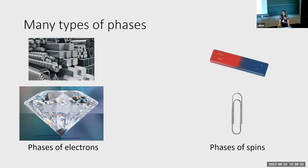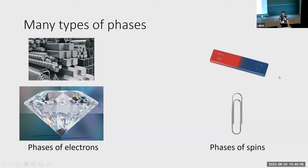We can also consider phases of matter of spins. Electrons in a material all have some angular momentum — they all spin. When the direction of that spinning is aligned between all of the electrons in a material, you get a magnet, or a ferromagnet as we call it. On the other hand, if the electrons tend to spin around randomly and orient themselves in various directions, you get something that is non-magnetic, like a paperclip. So all of these — ferromagnet, insulator, metal, paramagnet — are different phases of matter that we get by investigating the phases of things other than just the atoms and molecules themselves.